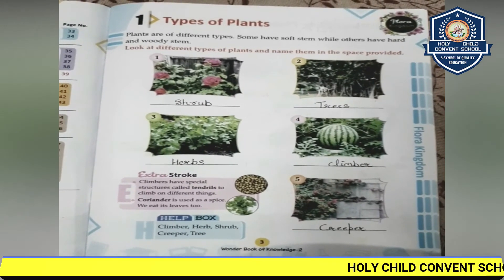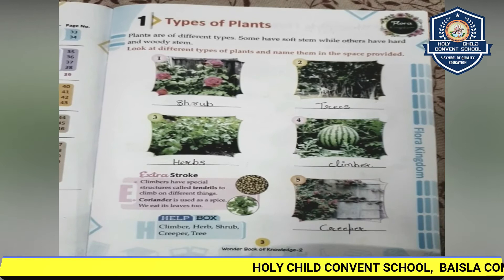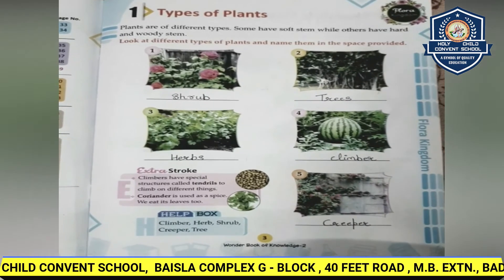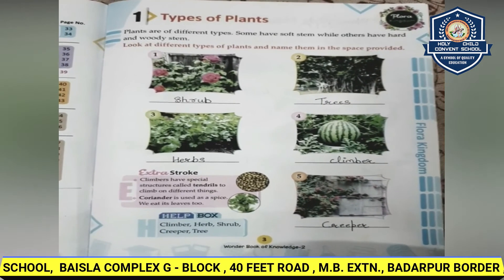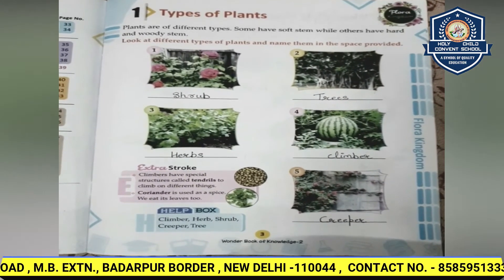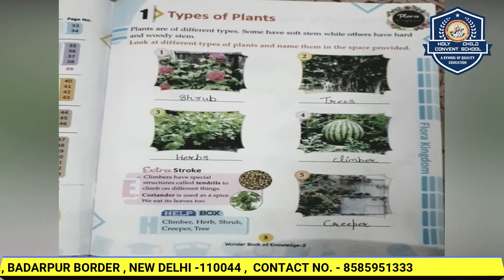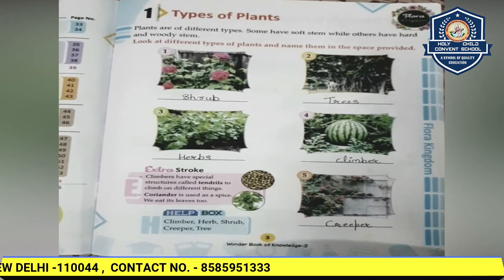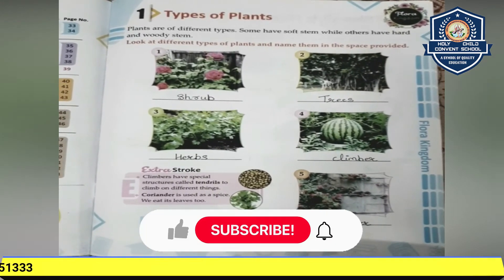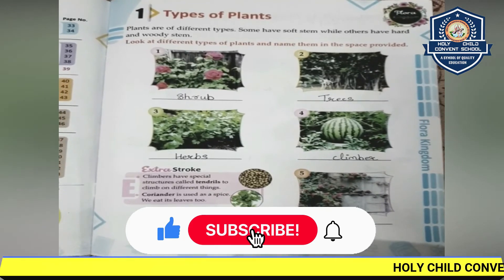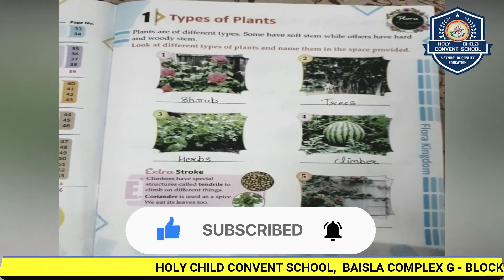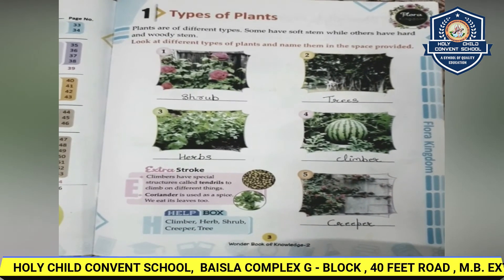There are also herbs like cinnamon, cloves, nutmeg, pepper, and cardamom — which we use in our daily life as spices. In general, herbs are plants with savory or aromatic properties that are used for flavoring and garnishing food, for medicinal purposes, or for fragrance.